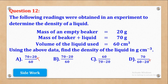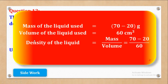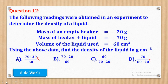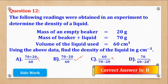We now have two remaining options, B and C, both having 70 minus 20 in the numerator. Since density equals mass over volume, our expression is (70 minus 20) over 60. Comparing with the remaining options, option C is eliminated, and option B — which is (70 minus 20) over 60 — is correct. The correct answer is part B.